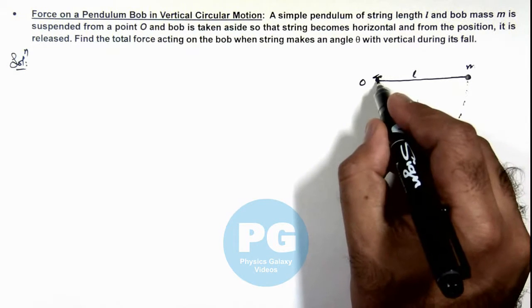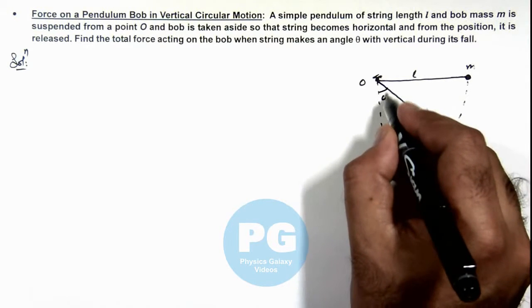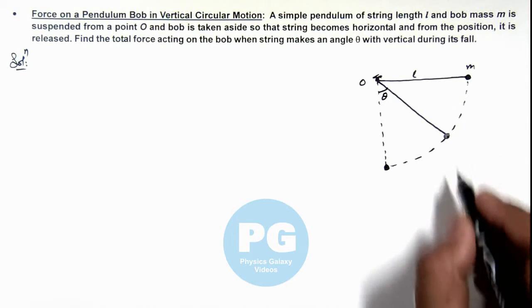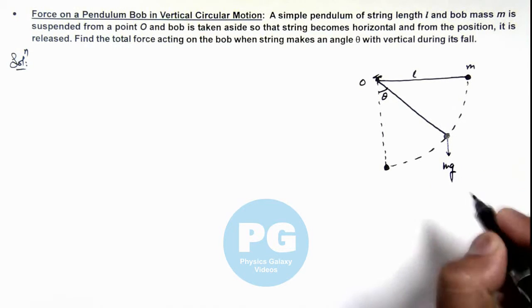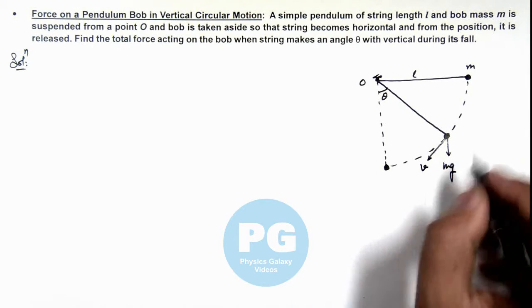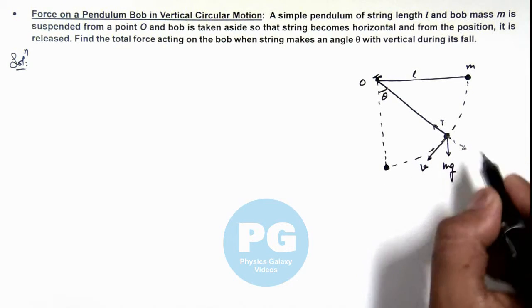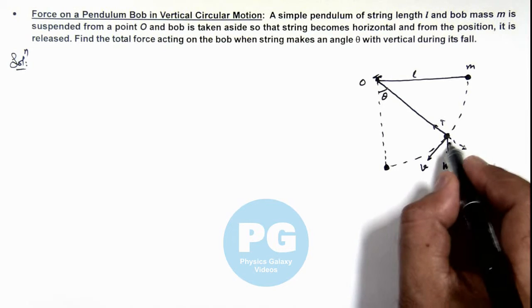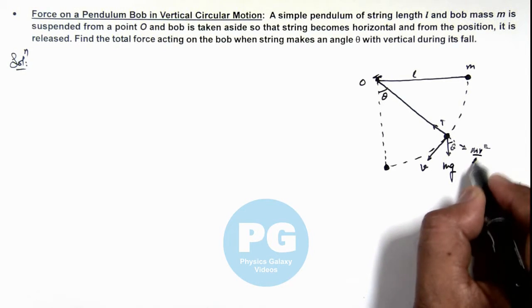We are required to find the force acting on the bob when the string makes an angle theta with the vertical. At this position, we know it is experiencing its weight mg in the downward direction and having a speed v. Tension is acting in this direction, and in the rotating frame of reference, the outward centrifugal force is mv² by l.